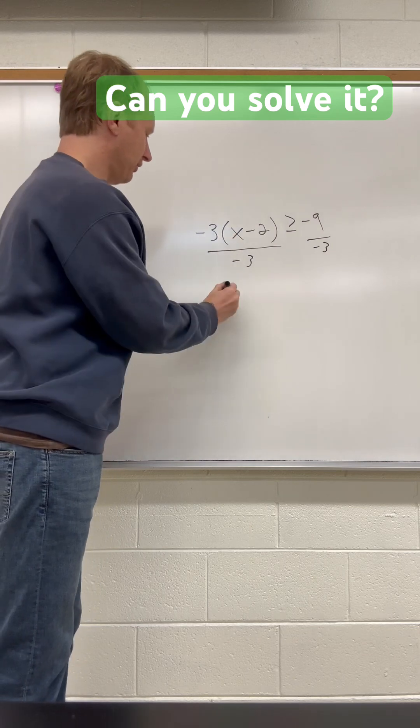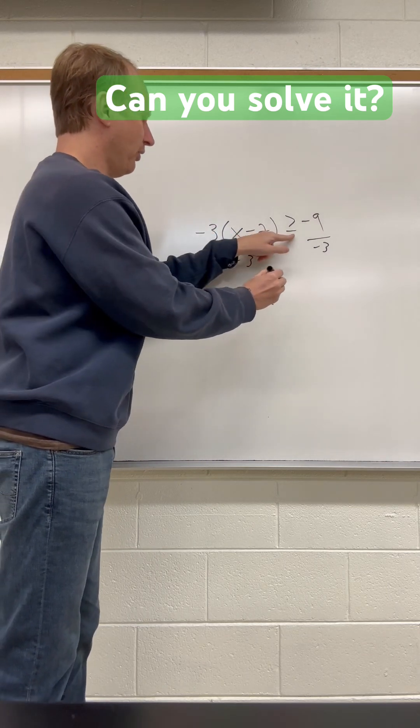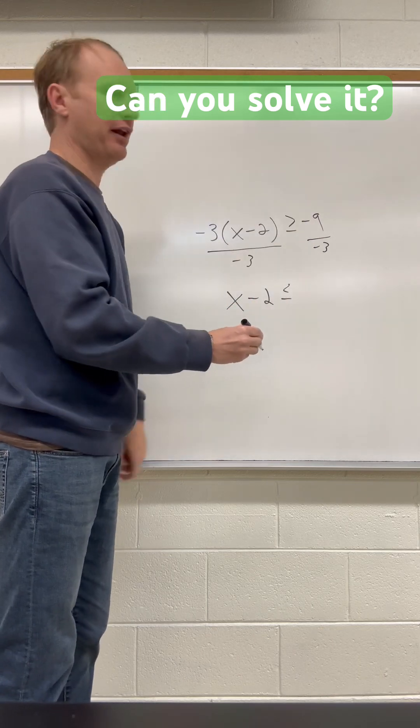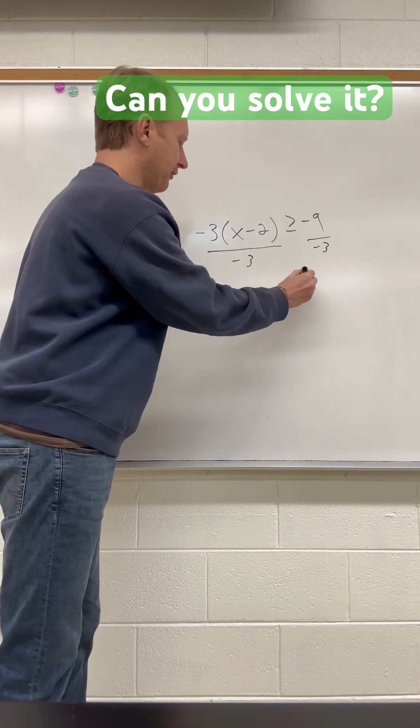Then you get x minus 2. The negative 3s divide out. You do have to flip the symbol because you're dividing by a negative, so negative 9 divided by negative 3 is positive 3.